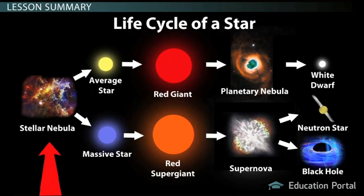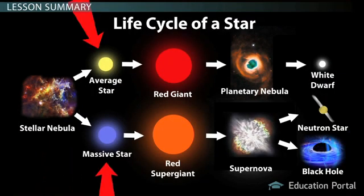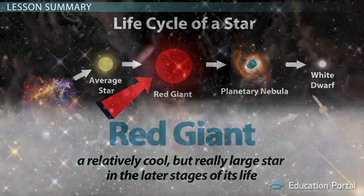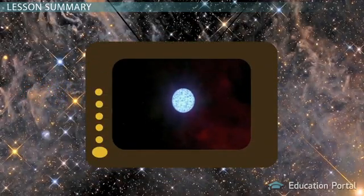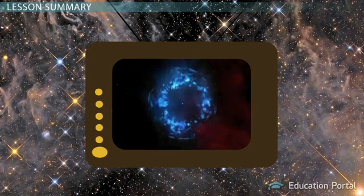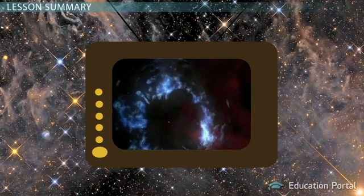A star starts in a stellar nebula and grows to a main sequence star. If the star grew big enough, it ages to a red giant, a huge star several times larger than our sun in the later stages of its life. Eventually the star dies in a huge explosion known as a supernova, a huge stellar explosion that is so big it can briefly outshine a whole galaxy.